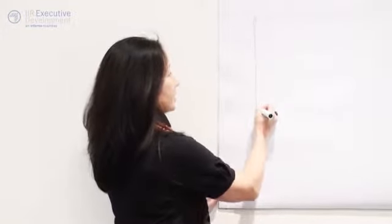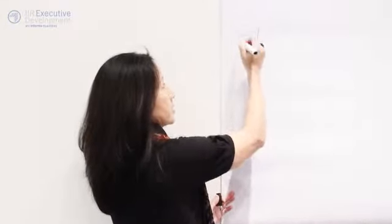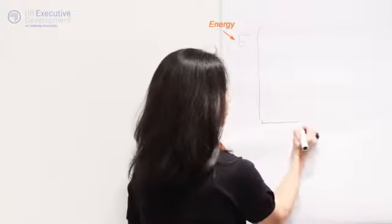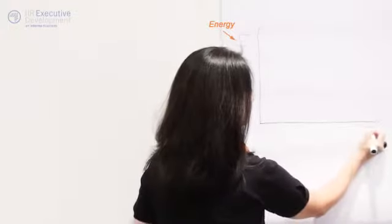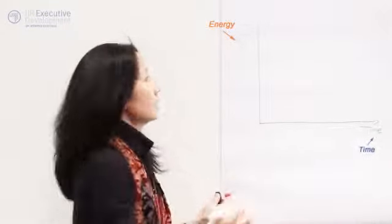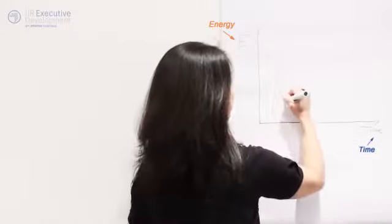This axis here is a representation of energy, so energy levels as we go from day to day. This one here is time. And then we have the J curve which sits right here.